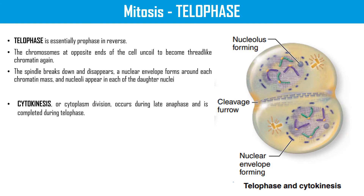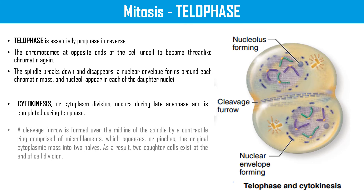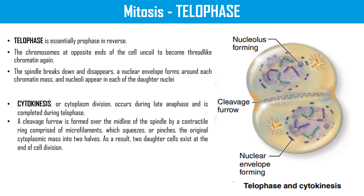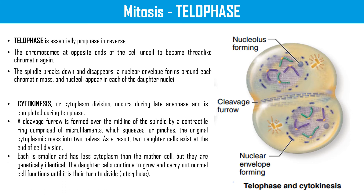The last stage is cytokinesis, or cytoplasm division, which occurs during late anaphase and is completed during telophase. 'Cyto' means cytoplasm and 'kinesis' means division, so cytokinesis is the division of the cytoplasm. A cleavage furrow is formed over the midline of the spindle by a contractile ring comprised of microfilaments, which squeezes or pinches the original cytoplasmic mass into two halves. As a result, two daughter cells exist at the end of cell division. Each is smaller and has less cytoplasm than the mother cell, but they are genetically identical. The daughter cells continue to grow and carry out normal cell functions until it is their turn to divide, leading back to interphase and the whole cell cycle begins again.